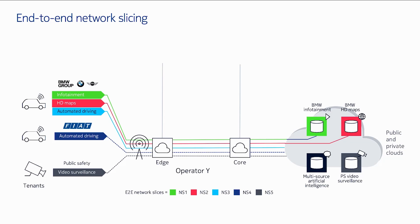The concept of network slicing is end-to-end. Let's assume I have an operator Y which has three customers: BMW, Fiat, and public safety. Each of these tenants, aka customers, need various independent logical networks from user equipment all the way to the application. We call each of these logical networks a network slice. In this example, I'm showing you five of them with various colors, and the colors represent the SLA required for each of these network slices.